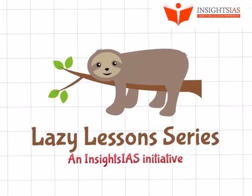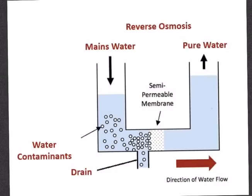Hello guys and welcome back to another lazy lesson. First of all, what is reverse osmosis? Osmosis is a process where a solvent naturally moves from an area of low solute concentration through a membrane to an area of high solute concentration.